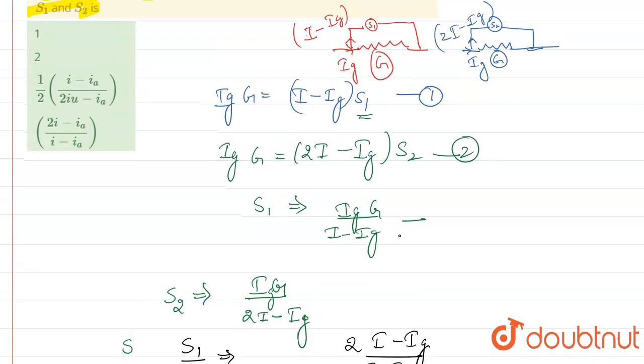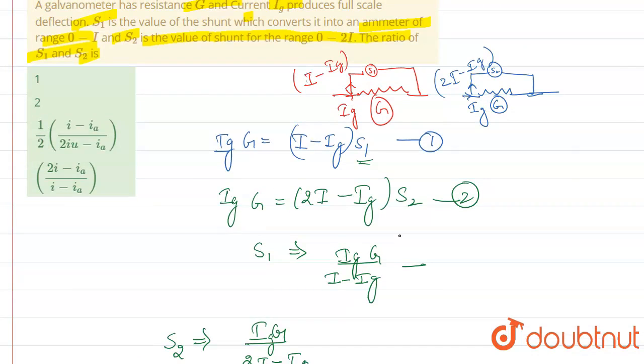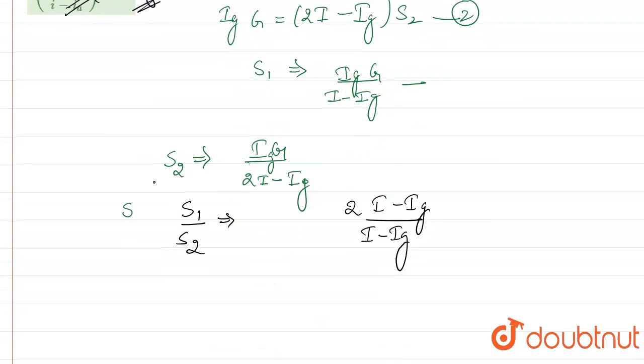So which is the correct option. So the correct option is option 4. There is the correct option here, IA is the current flowing in a galvanometer, so here which is given in the question it is IG, so we will write it as IG. So you will get the answer, thank you.